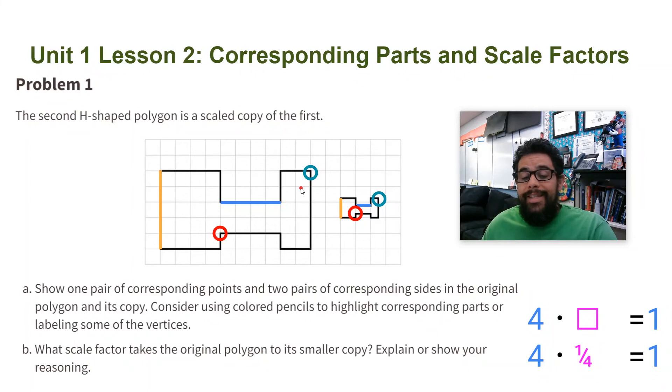This works for any side in the figures. I can take this side right here. This side is two. I multiply by a quarter and I get half. This side right here is five. I multiply by a quarter and I get this one, one and a quarter. So no matter what side I'm choosing, if I multiply by a quarter, I'm going to get the corresponding side.